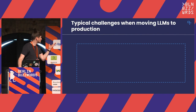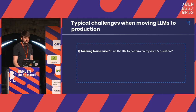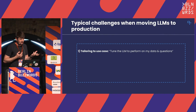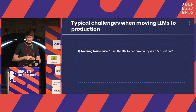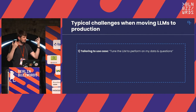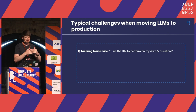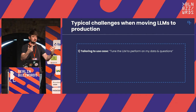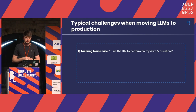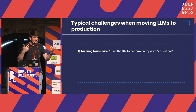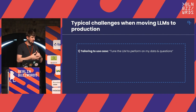Let's get started with the most typical challenges when moving LLMs to production. Number one: most high-value use cases in bigger companies typically include some internal company data. It's not information on the web — it's often contracts, maintenance documents from aircraft, financial reports, a lot of sensitive data. Our users typically don't want this data exposed to ChatGPT, and they also want to tailor answers to their specific use case and domain. So typical questions are: how can we tune the model to our data? How can we teach it about this internal company knowledge?